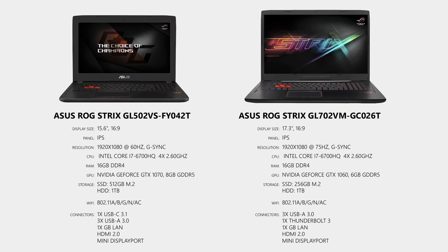The GL502VS has a 15.6 inch IPS panel which supports G-Sync and has a maximum display refresh rate of 60Hz at 1080p. It has a Core i7-6700HQ CPU, 16GB of DDR4 memory, and the NVIDIA GTX 1070 with 8GB of GDDR5 memory. The second demo unit is a GL702VM which has a 17.3 inch IPS panel supporting G-Sync and a maximum display refresh rate of 75Hz at 1080p, with the same Core i7 processor but a GTX 1060 with 6GB of GDDR5 memory.